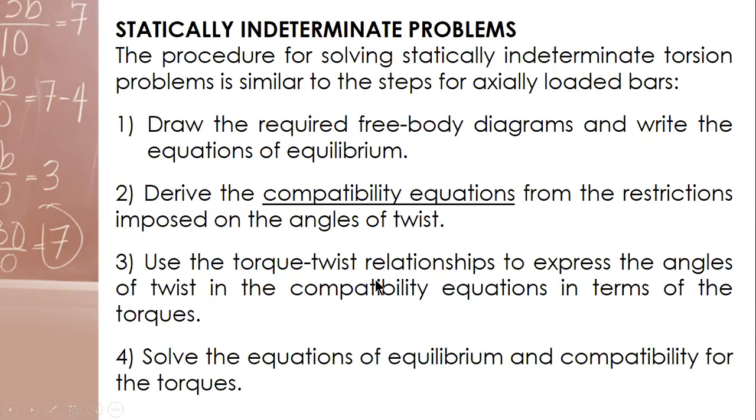So that torque-twist relationship, simplify it to get the additional equation. Then combine this with the equation of equilibrium and you will be able to solve for the unknown quantities. That will be the last part: solve the equation equilibrium and compatibility for the torque. Normal equation, equation equilibrium, additional compatibility, and solve.